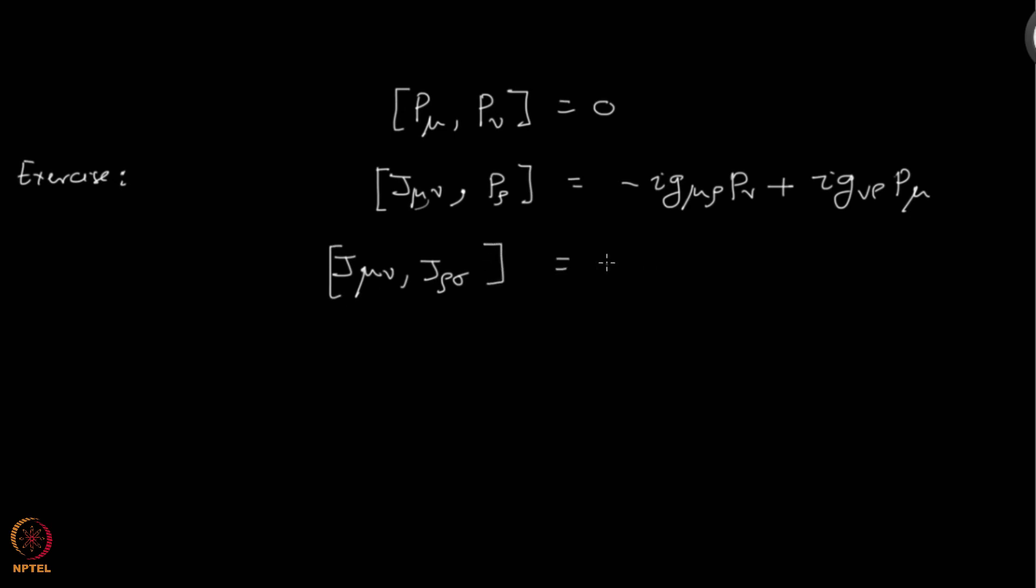I will write down here for completeness: commutator of j mu nu, j rho sigma, and the last one is commutator of j mu nu, j rho sigma. These three commutation relations give you the algebra of the Poincaré group, or maybe I should just simply write Poincaré algebra.